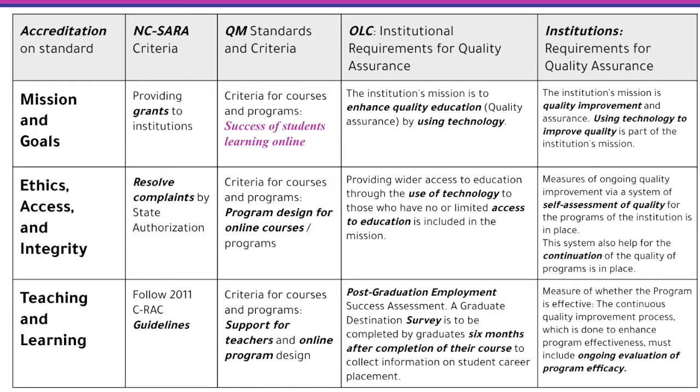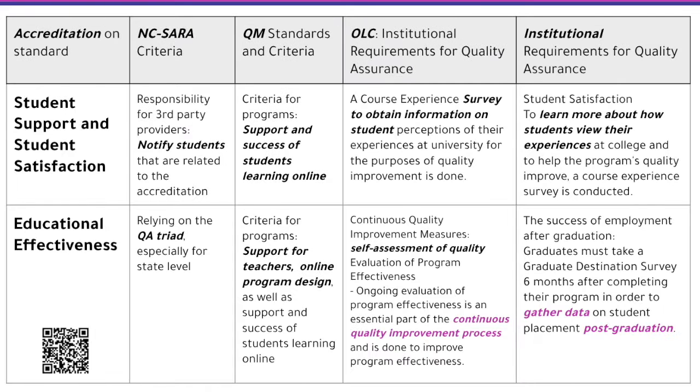Here is a list of accreditation, and you can see a table that aligns NC SARA, Quality Matters Standards, OLC, and institution. Focusing on the first column — the objective of the standard — which is the mission and goal, we provide success metrics for students about how they can learn online. There is ethics, access, integrity, teaching and learning, student support, student satisfaction, and educational effectiveness. These all work together in order to measure the quality of the improvement process and ensure students get the job they desire after graduation.